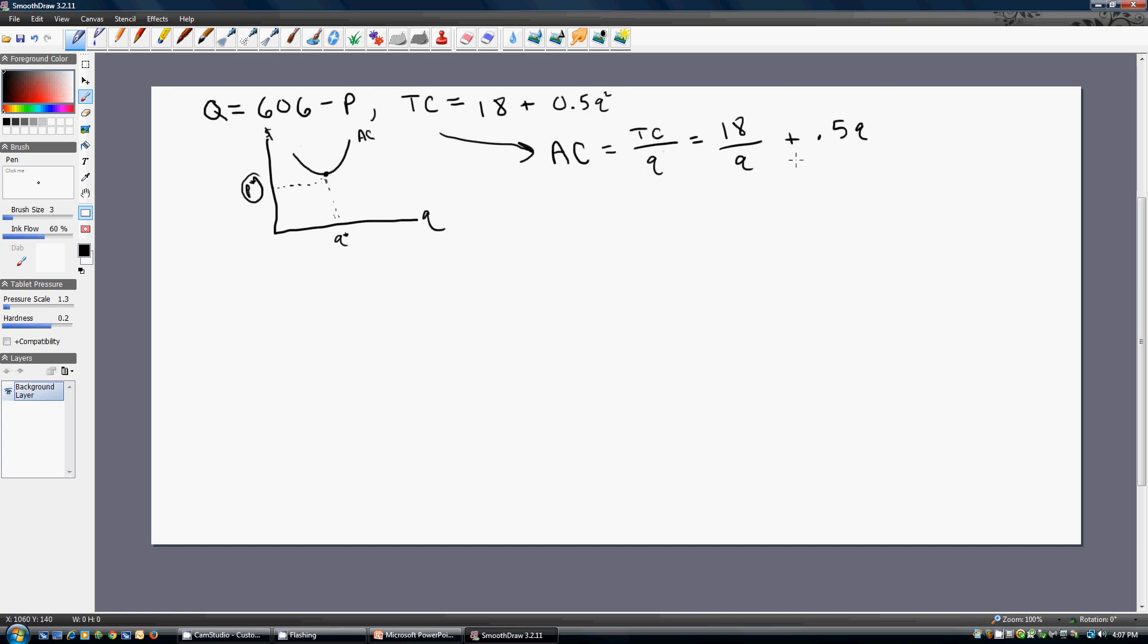We want to find where this average cost equation is minimized. To do this, we take the derivative of average cost with respect to output. This is the slope of the average cost curve, and we're interested in finding where the slope is zero, which is at the bottom. The only place where the slope is zero is at the bottom of the average cost curve. Taking our derivative, we get dAC/dq = -18/q² + 0.5.